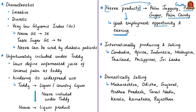Internationally, Neera is currently being produced in Cambodia, Africa, Indonesia, Malaysia, Thailand, Philippines and Sri Lanka, and the US has started importing it from Africa. Traditionally, fresh sap is not bottled or exported, but under certain conditions of temperature and other requirements, Neera can be exported. In India, states like Maharashtra, Odisha, Gujarat, Andhra Pradesh, Tamil Nadu, Kerala, Karnataka and Rajasthan are already selling Neera.